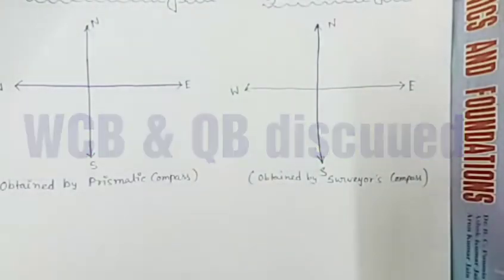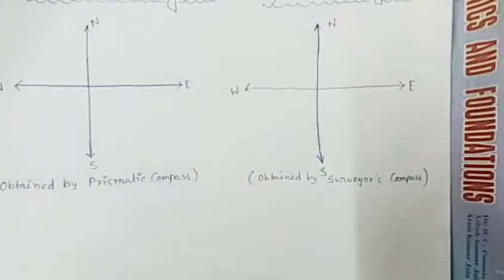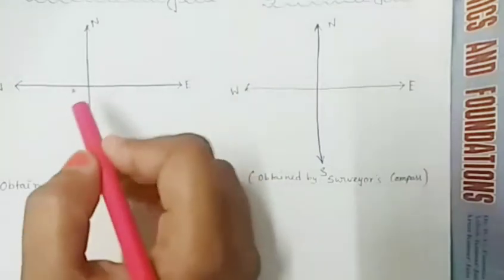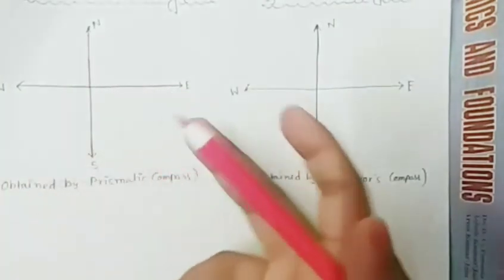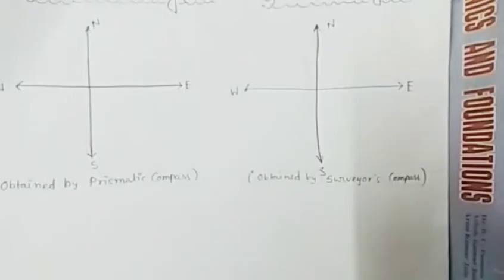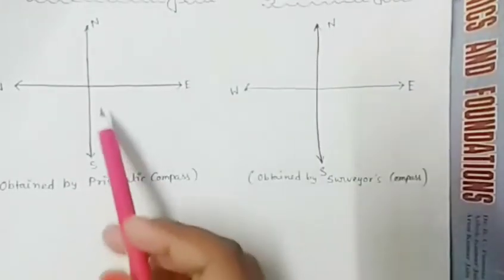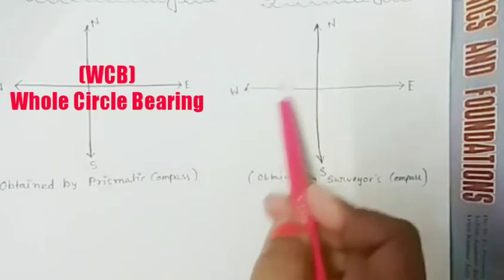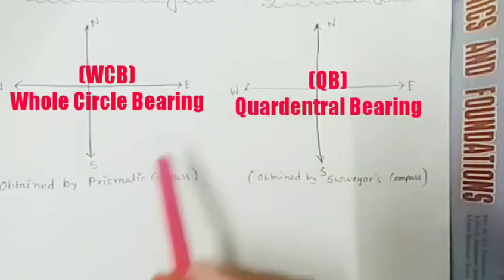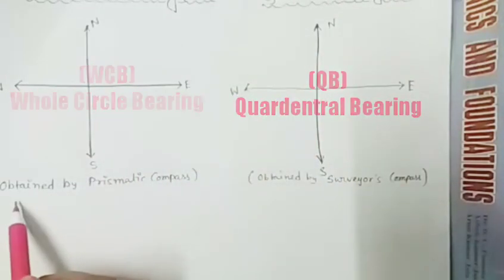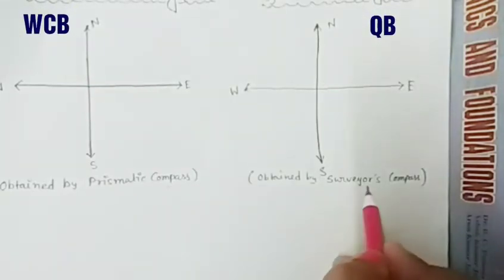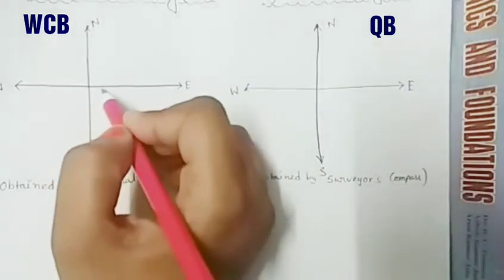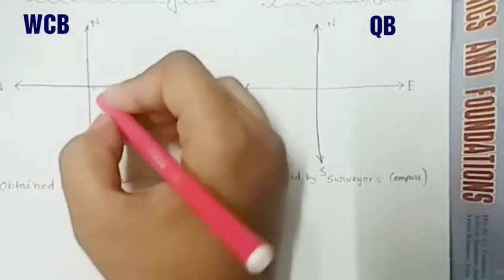The magnetic bearing of a line is measured always clockwise from the north. It is designated by two coordinate systems: one is the Whole Circle Bearing system and another is the Quadrantal Bearing system. Whole Circle Bearing is taken by prismatic compass and Quadrantal Bearing is obtained by surveyor's compass.